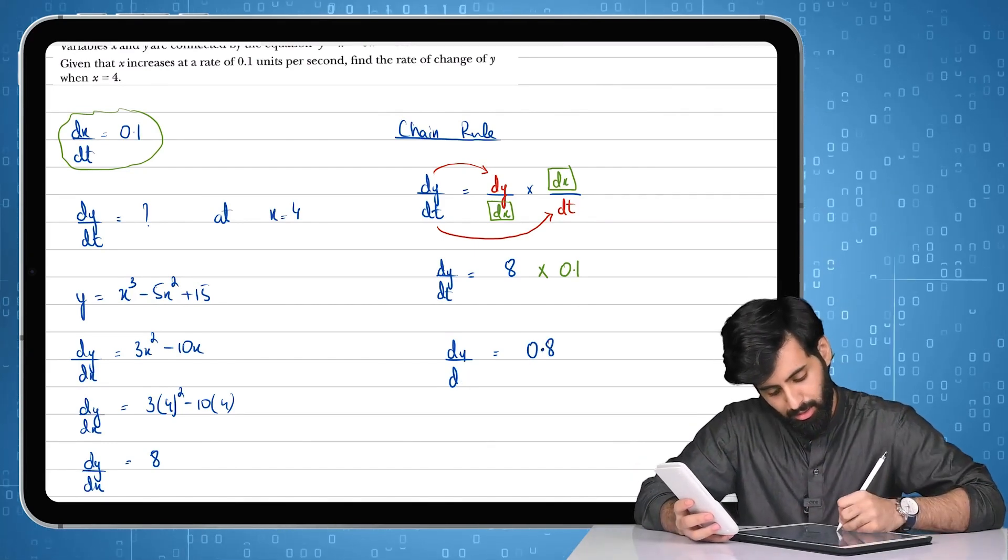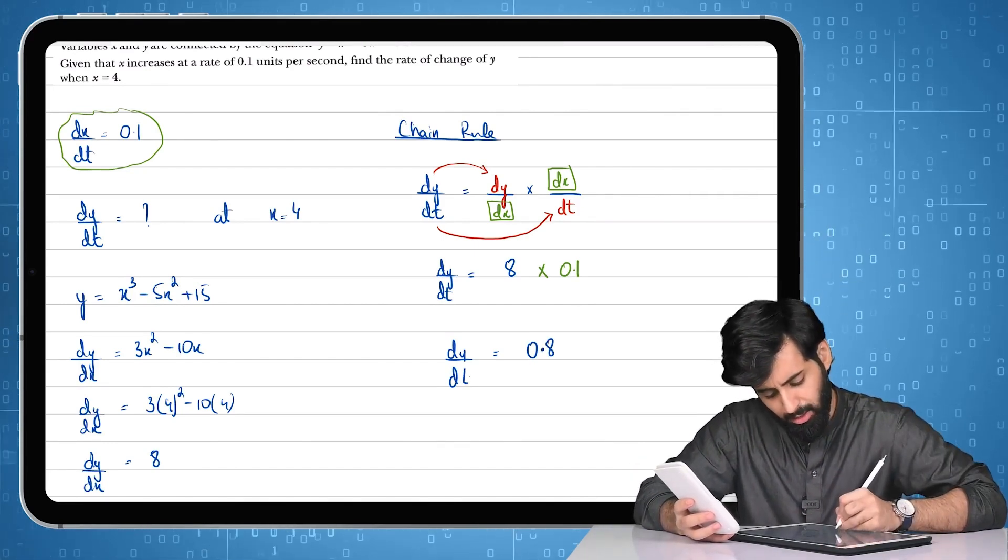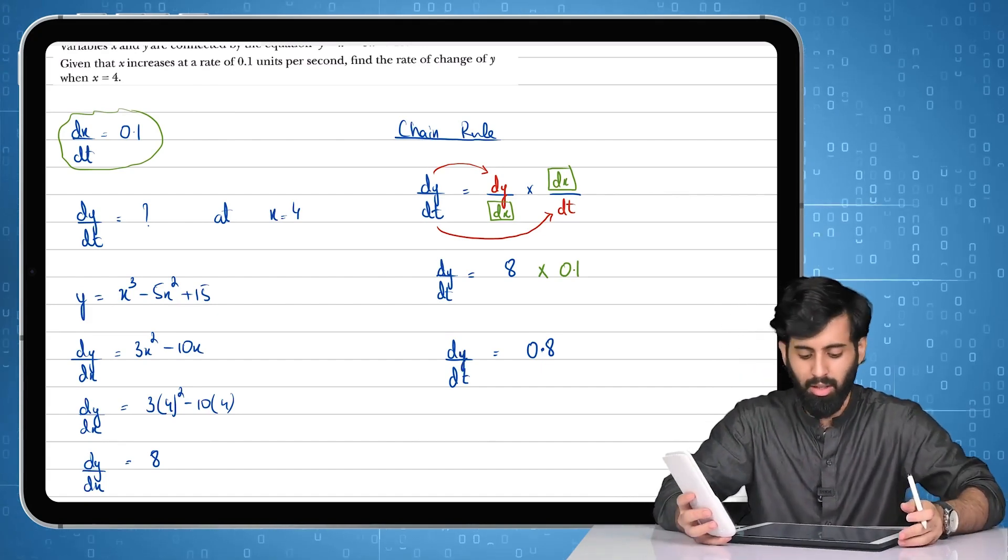So 8 times 0.1 is going to be 0.8. And sorry, not dy/d, this will give me dy/dt. Yeah, sorry about that.